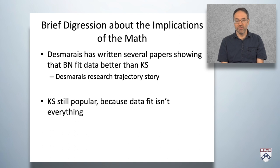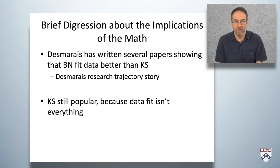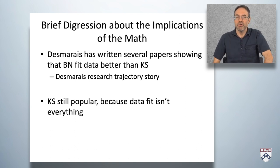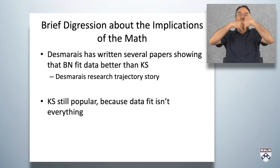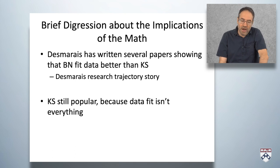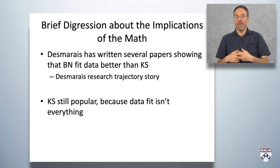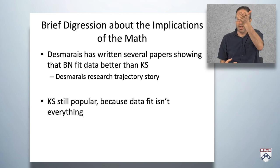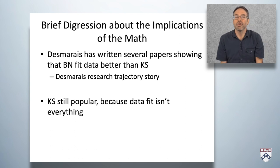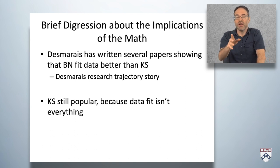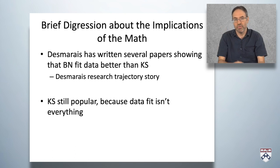Overall, Desmarais has written several papers showing that Bayesian networks fit data better than knowledge spaces. This is an interesting research trajectory showing what a good scientist Michel Desmarais is. Michel came in having been one of the people who developed partial order knowledge spaces. People asked if Bayesian networks would fit the data better, and Michel said no and set out to prove it. He collected the data — and lo and behold, Bayesian networks fit better. He published it, then collected another data set — and again, Bayesian networks fit better. So Desmarais concluded Bayesian networks are better. Even though he worked on one approach, when the data showed he was wrong, he changed his mind. That is sadly uncommon in science, where typically these changes in perspective come when the next generation comes through.